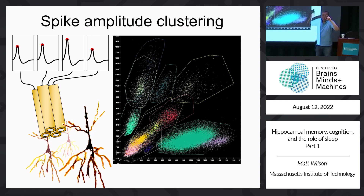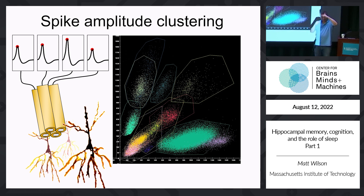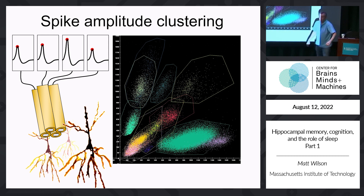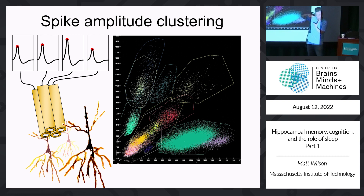If you look at the clusters, some are more elongated—suggesting fixed-location amplitude change, like a complex spike. Others are off-axis, suggesting a propagating active dendritic spike. There's a lot you can draw from just looking at the cluster distribution. In the neocortex, where you have fewer active dendritic conductances, you tend to find clusters are more compact and uniform. You don't see the same kind of complex spiking behavior there.